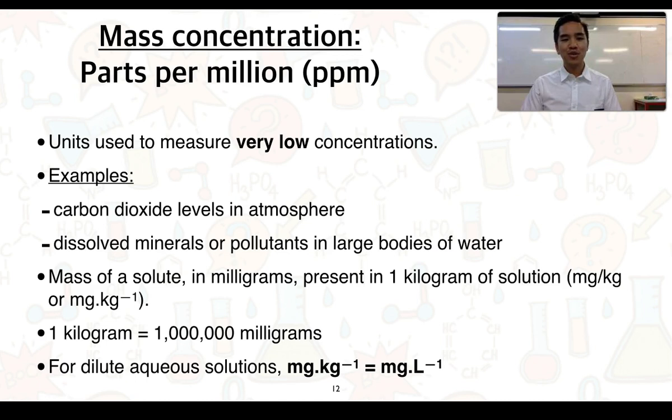Two more units we're going to talk about. Mass concentration units are firstly parts per million. These are often used to represent very low concentrations. Examples consist of carbon dioxide levels in the atmosphere, as you might recall from 1.1, or dissolved minerals or pollutants in large bodies of water. Parts per million represents the mass of a solute often measured in milligrams that is present in 1 kilogram of solution.